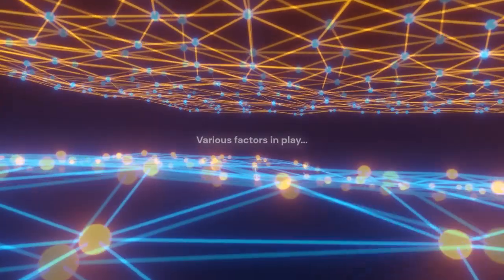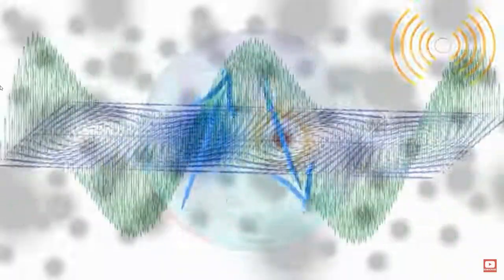But why does Atom Computing use neutral atoms? The answer does not consist of a single factor. Besides adaptivity to scaling and being easy to control through light, it's mostly to reduce interference among themselves and with the ambient.